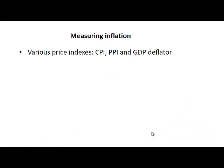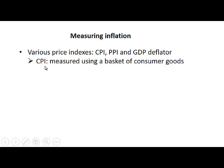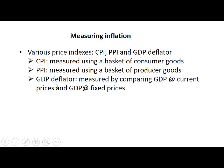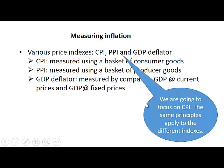How do we measure inflation? We have various price indexes that we can use: CPI, PPI, and the GDP deflator. The consumer price index, or CPI, is measured using a basket of consumer goods. The producer price index, PPI, is measured using a basket of producer goods. The GDP deflator is measured by comparing GDP at current prices and GDP at fixed prices. We are going to focus on the CPI, but the same principles apply to the different indexes.